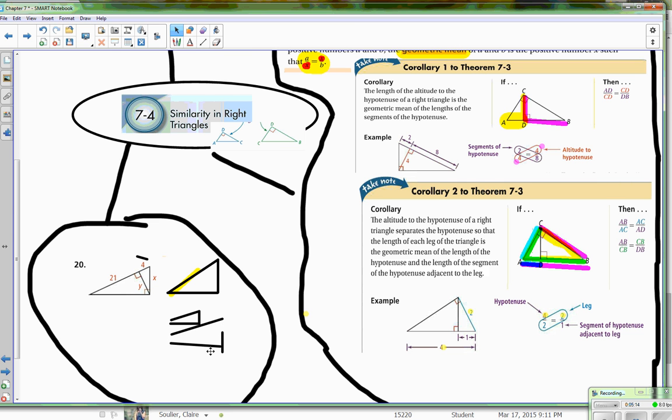So if you go, my big triangle, the hypotenuse is 21 plus 4, which is 25.